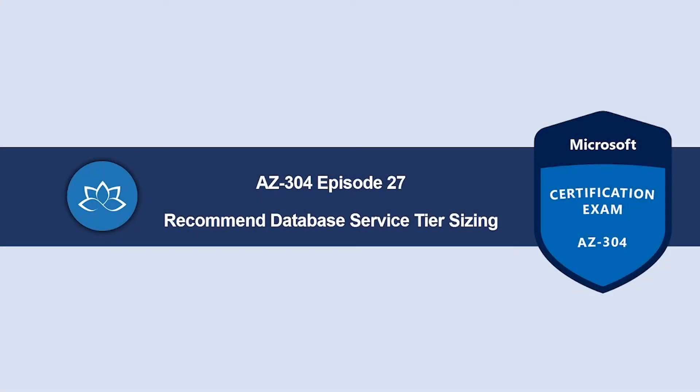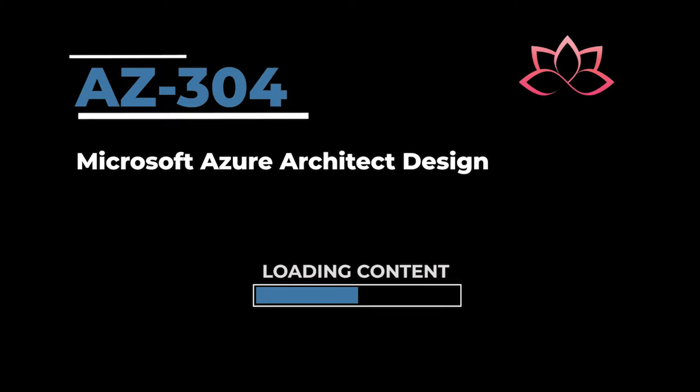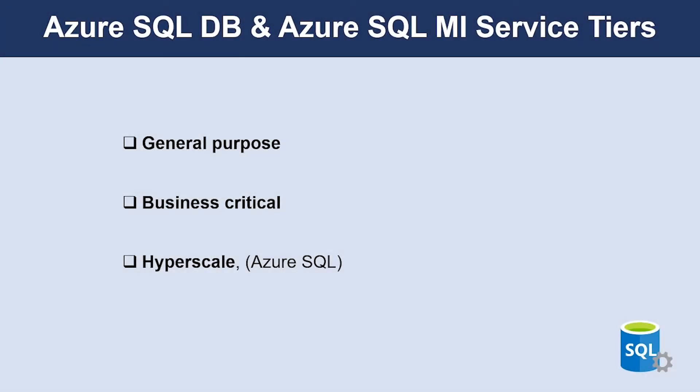Welcome back. In this episode we're going to learn about recommending a database service tier sizing. Azure SQL Database and Azure SQL Managed Instance are based on the SQL Server database engine architecture adjusted for the cloud environment to ensure 99.99% availability. There are two service tiers you need to be aware of: General Purpose and Business Critical. For Azure SQL Database there is an additional service tier which is Hyperscale.